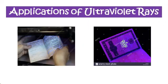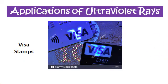UV rays are used to prevent counterfeits. Sensitive documents such as credit cards and passports include a UV watermark that is only seen under UV-emitting light. Visa stamps also contain large detailed seals which are invisible under normal light but strongly visible under UV illumination.